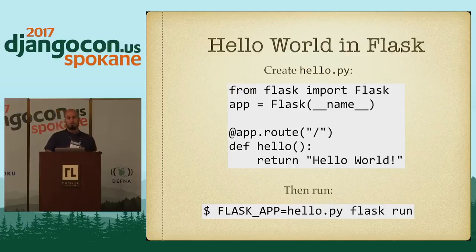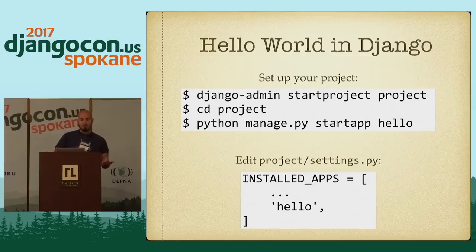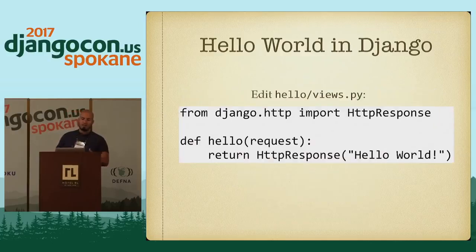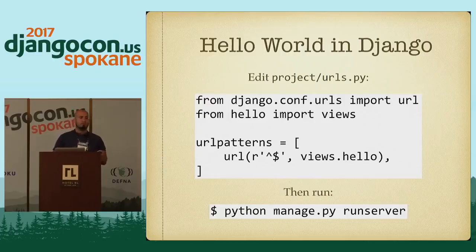By contrast, if you want to do Hello World in Django, you start by installing Django and then do Django admin start project. You go into your project, make your hello app, which you have to put into settings.py. Then you write your hello view, which requires importing the HTTP response thing and returning it. And then you have to deal with URLs.py, which means writing regular expressions — which is always a pain, especially for someone new to programming.